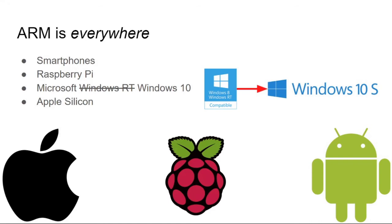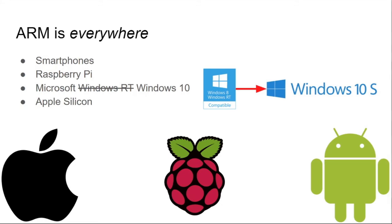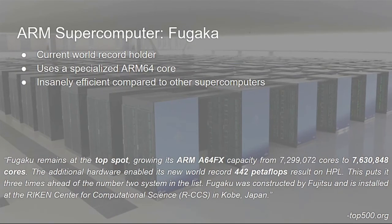ARM is another computing architecture for the future of computing, and is another branch of Reduced Instruction Set Computing. It is also found everywhere, from smartphones to tinkering toys to laptops. And did I mention AMD tinkered with ARM processors in their original Opteron line of CPUs last decade? ARM has a lot of potential, and that's why the supercomputer Fugaku in Japan currently holds the world record on the Top500 list, using several million ARM64 processing cores. ARM is extremely competitive in relation to other supercomputers of the world, and is even more competitive in the realm of power efficiency compared to x86.